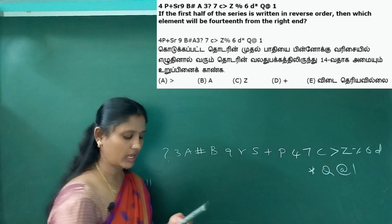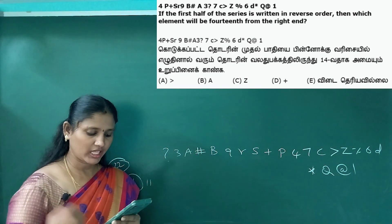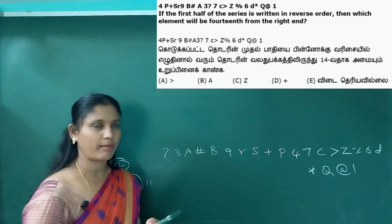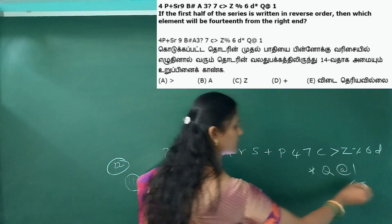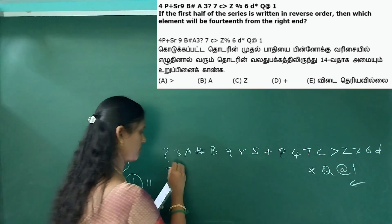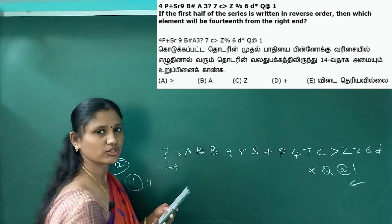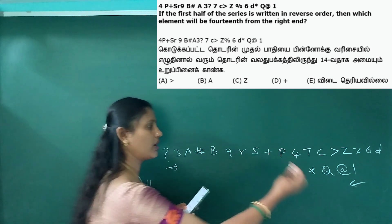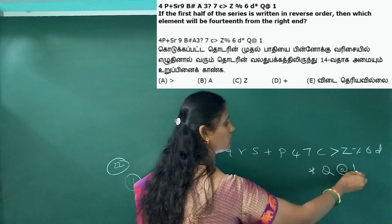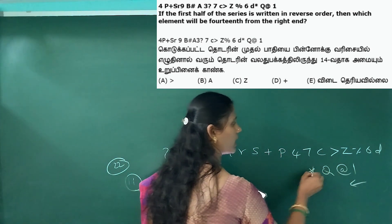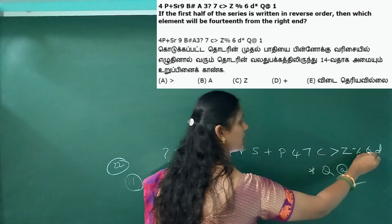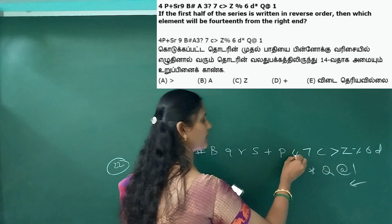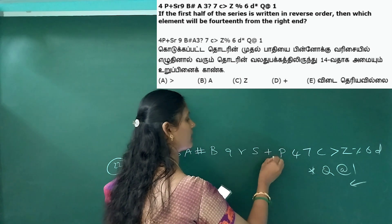So now we have to reverse the question mark. The same pattern applies. Look: 7c greater than z percentage 6d q at 1. We count the positions: 1, 2, 3, 4, 5, 6, 7, 8, 9, 10, 11, 12, 13, 14.